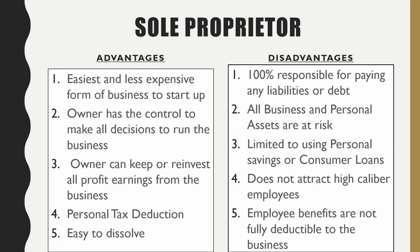Fourth, personal tax deductions — owning a business allows you to write off many expenses as a personal tax deduction. Fifth, it's easy to dissolve — you can close your business at any time by closing the bank account, selling assets, and notifying the state. Terminating a sole proprietorship is straightforward and simple.